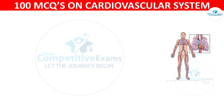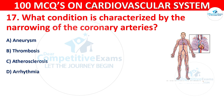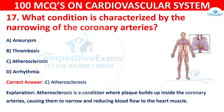Q17. What condition is characterized by the narrowing of the coronary arteries? Options are: aneurysm, thrombosis, atherosclerosis, or arrhythmia. The correct answer is C — atherosclerosis. Atherosclerosis is a condition where plaque builds up inside the coronary arteries, causing them to narrow and reducing blood flow to the heart muscle.